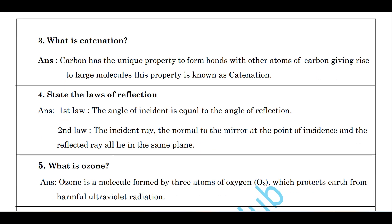What is catenation? Carbon has a unique property: to form bonds with other atoms of carbon and give us a large number of carbon compounds. This property is called catenation. Catenation is the unique property of carbon to form bonds with other carbon atoms to give a large number of molecules.